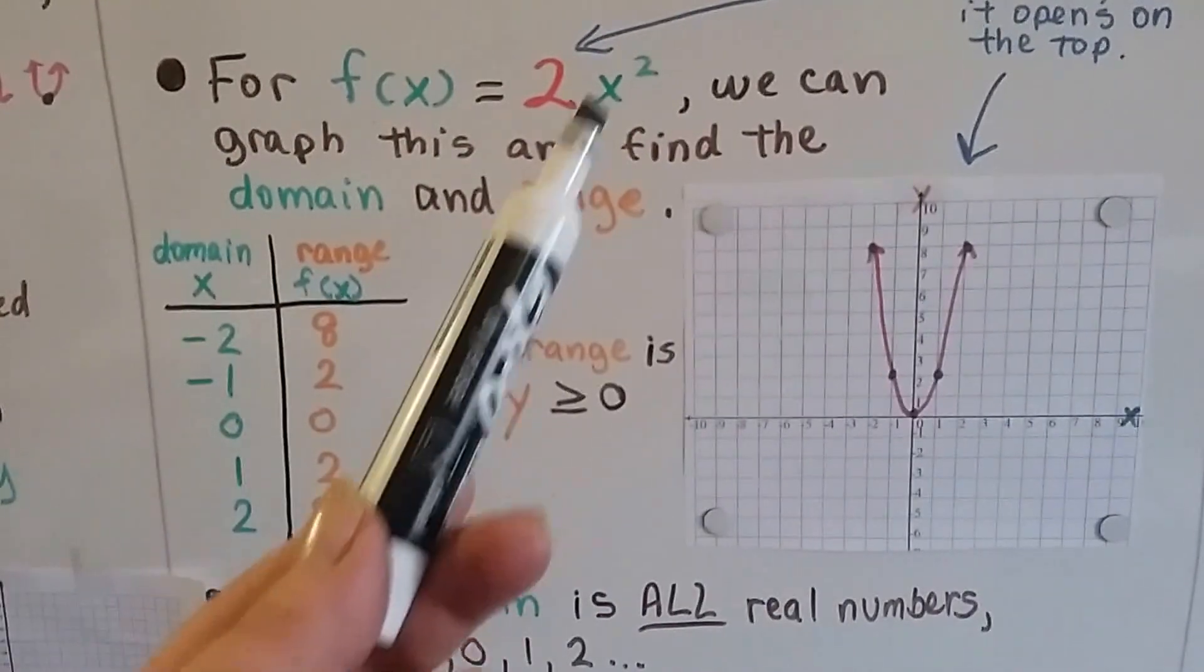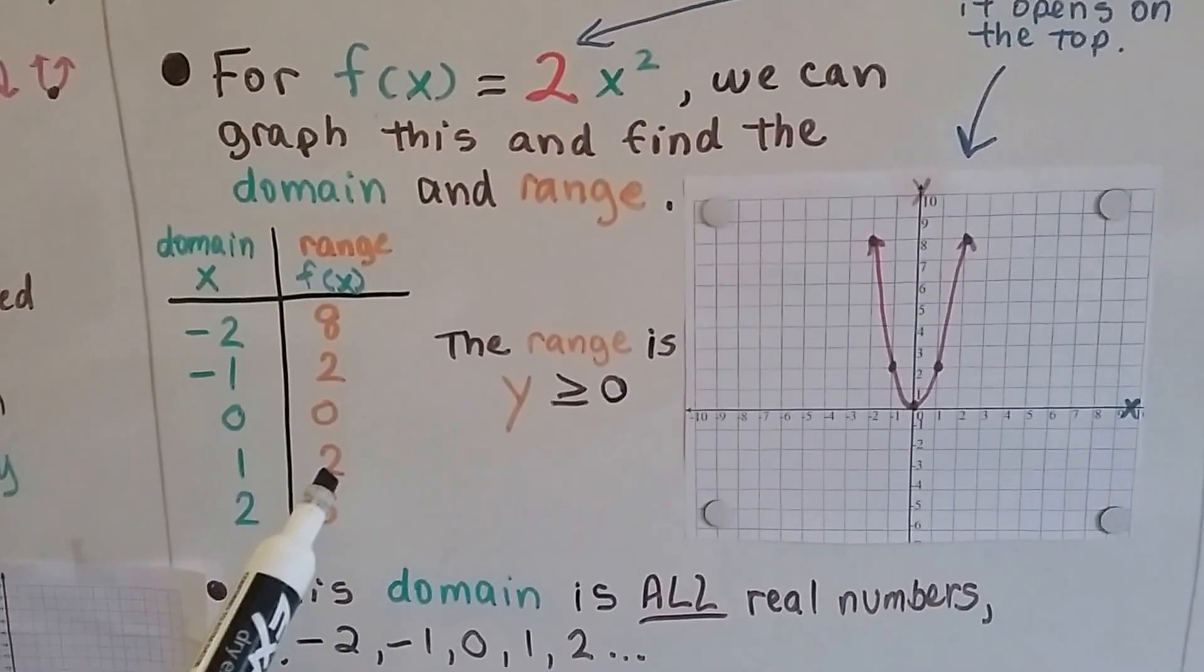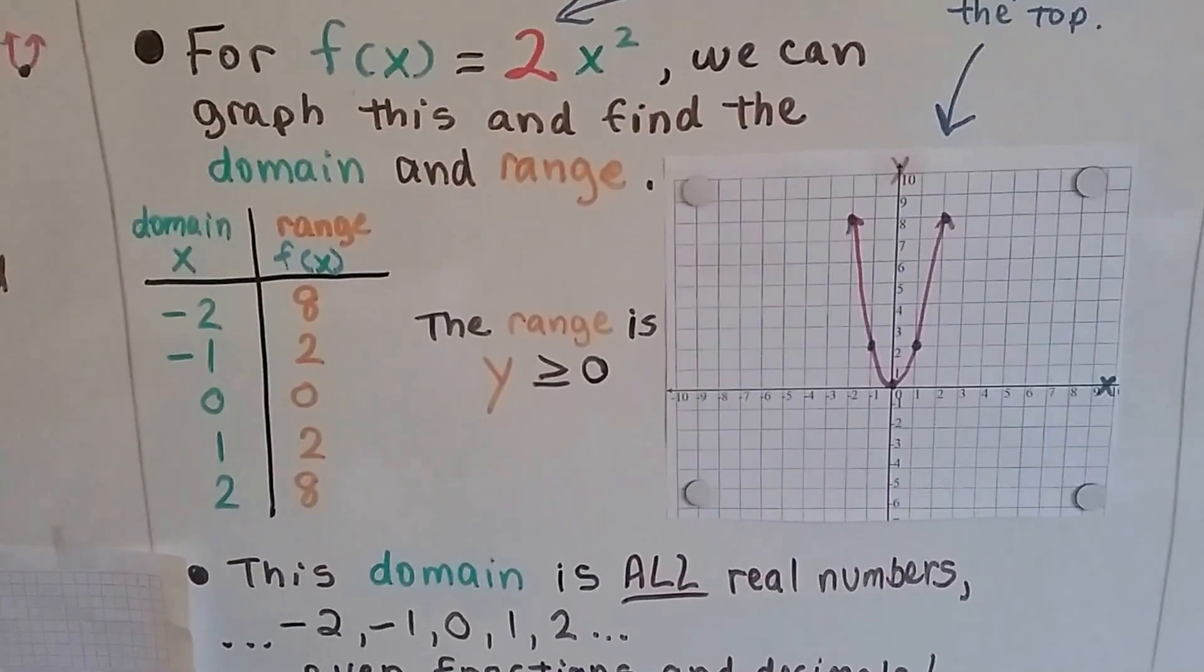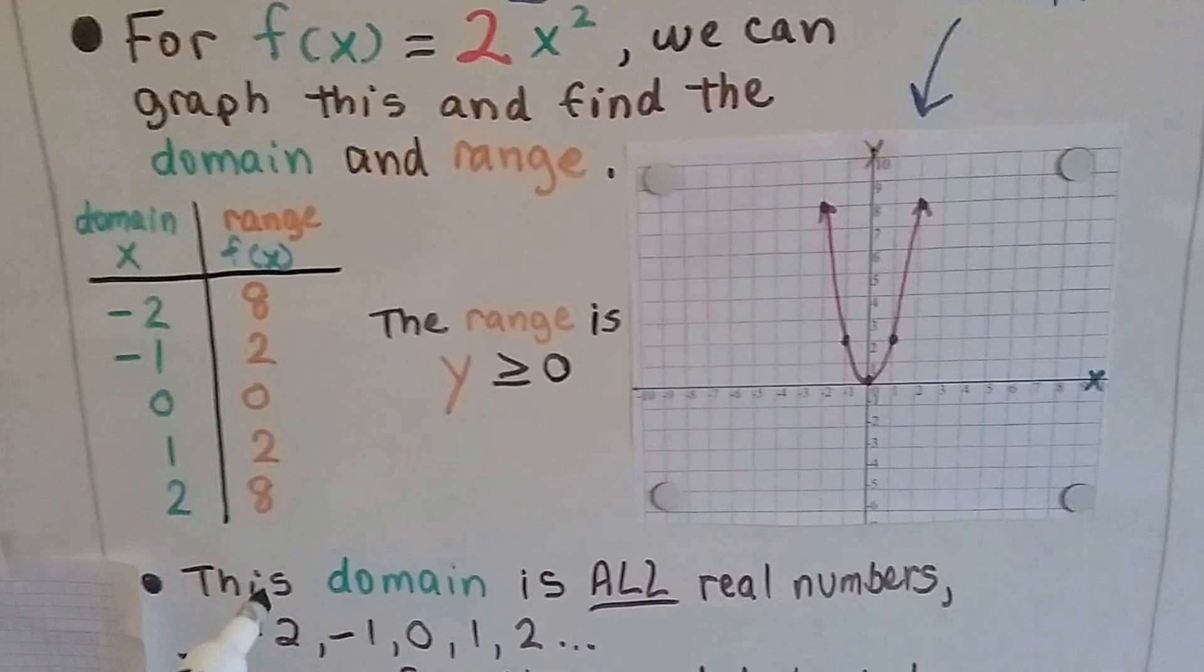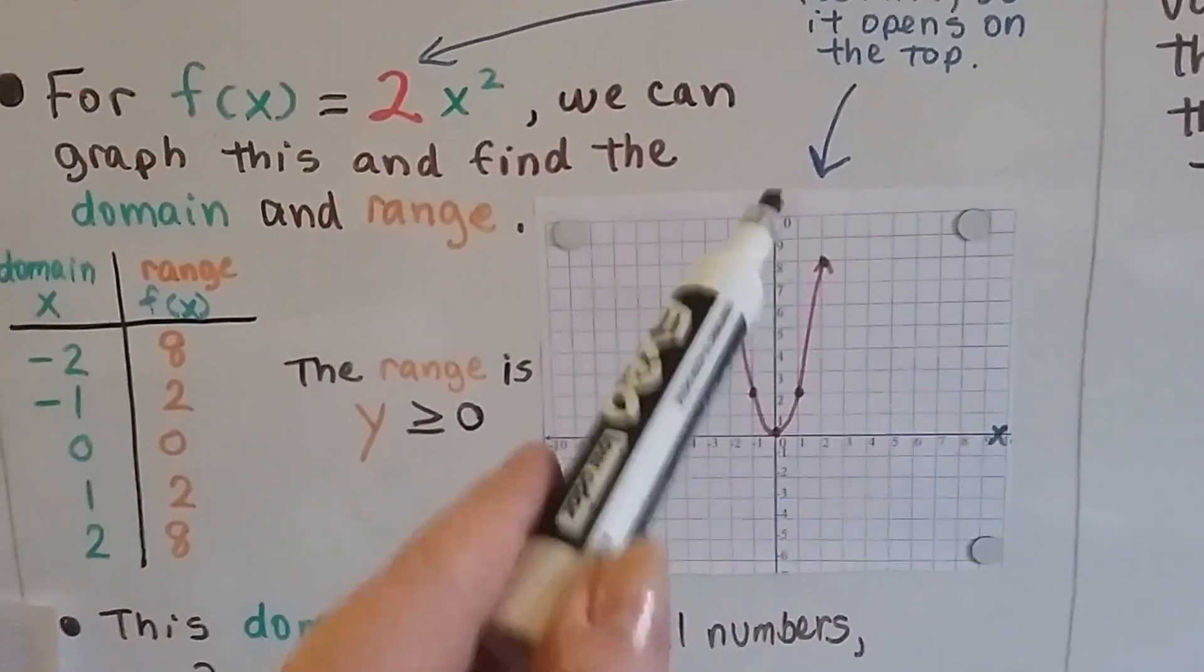If x is a 1, that means we have 1 times 1, which is 1. 2 times 1 is a 2, so the function of x is a 2, see? We can plot these because these are ordered pairs, aren't they? And we can make our parabola, and it's positive, it's opening at the top.